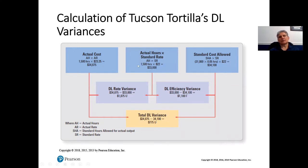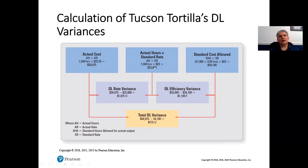It's easier to look at the graphic representation, just like we did for materials. On the far left is actual; on the far right is budgeted or standard; in between is a combination of actual and standard. To focus on the rate variance, we use actual hours on both sides — 1,500 actual hours. The actual rate was $23.25 and the standard rate was $22, giving us $34,875 versus $33,000. The difference is $1,875 unfavorable.